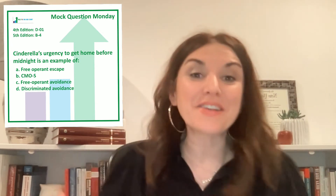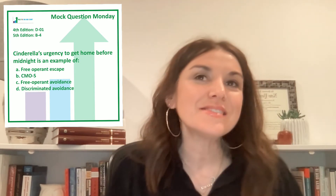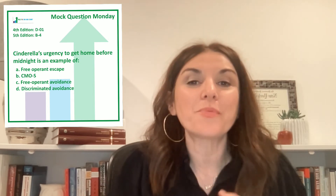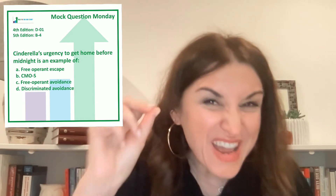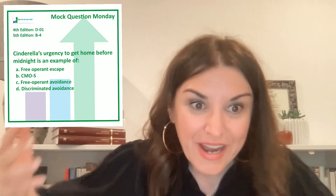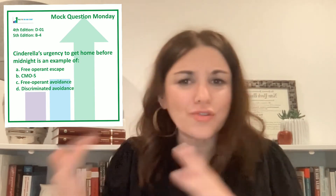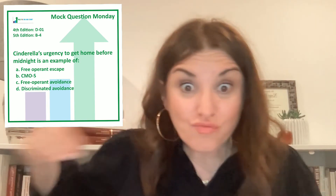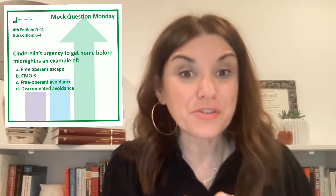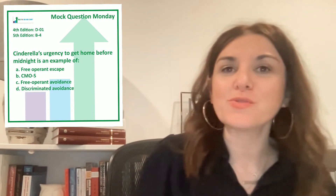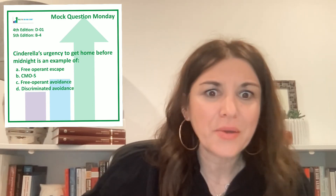This is in direct contrast to discriminated avoidance. This is a type of negative reinforcement in which the contingency for responding is the prevention of the onset of an aversive stimulus, but in the presence of a signal or SD. So if the clock strikes 12 and she rushes home in hopes of avoiding everything falling apart, that would be discriminated avoidance. Another example: when a traffic report signals that there's a lot of traffic on a particular highway, so you avoid that highway.